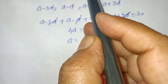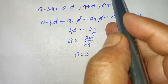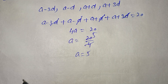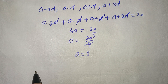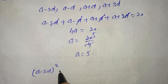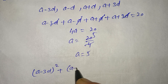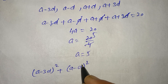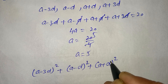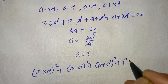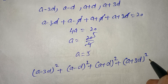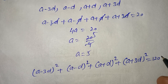And the sum of whose squares is 120. Now the sum of their squares: (A minus 3D) whole square plus (A minus D) whole square plus (A plus D) whole square plus (A plus 3D) whole square is equal to 120.